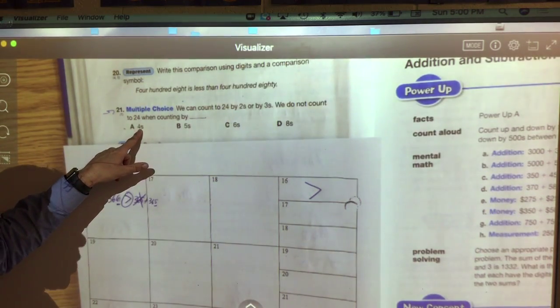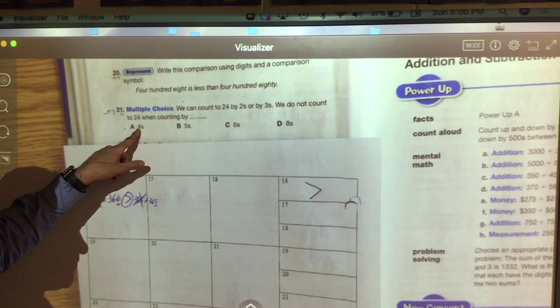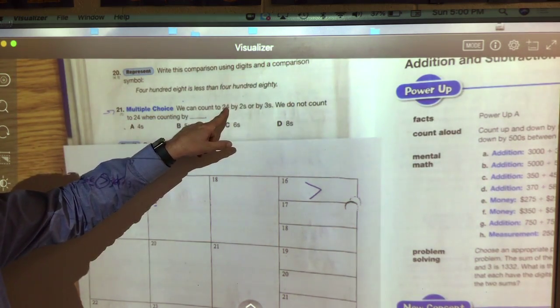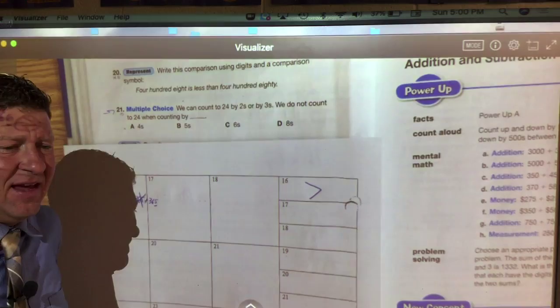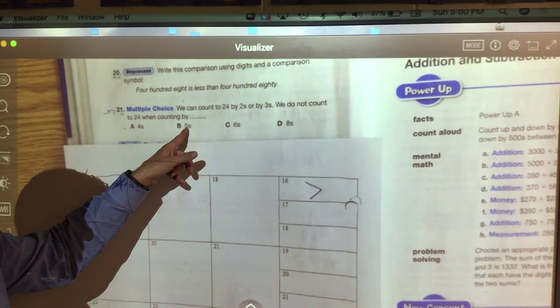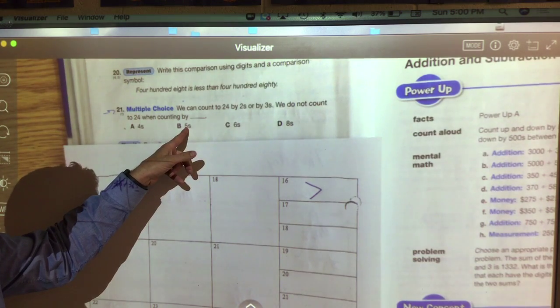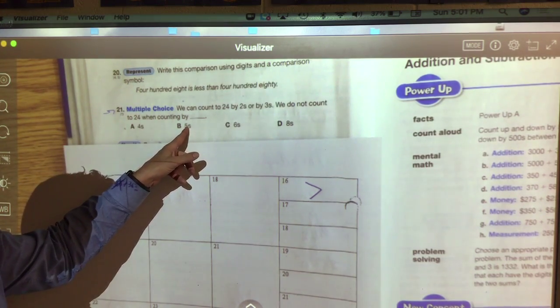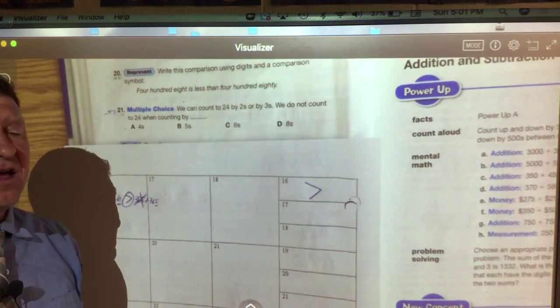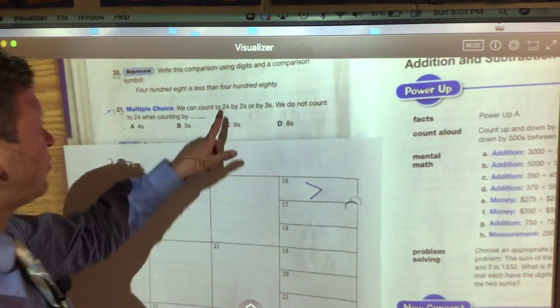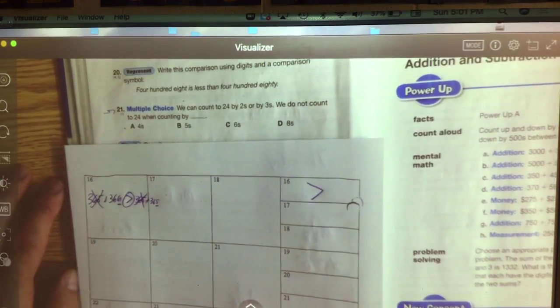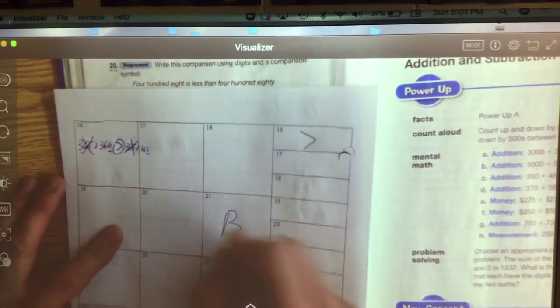Can we get there by 4s? 4, 8, 12, 16, 20, 24. Now guys, maybe it would be even easier to start thinking about which one can you not, because look, this one's an odd number. 5, 10, 15, 20, 25, 30. We jump right over 24, so we know it's got to be the 5s. The rule for 5s is it always ends with a 0 or ends with a 5, and 24 doesn't. So our answer for that one is B. Number 21 is B.